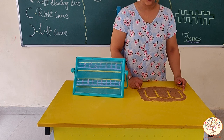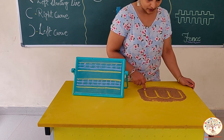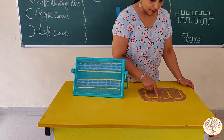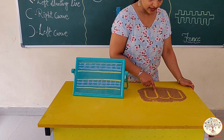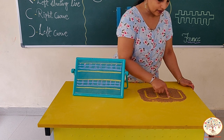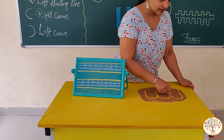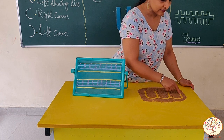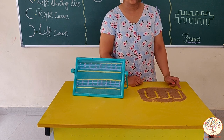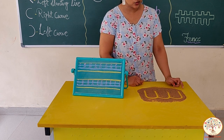Once again kids — draw a standing line, then up curve, then standing line. Then standing line, up curve, then standing line. Then standing line, up curve and once again standing line. This is loop pattern.